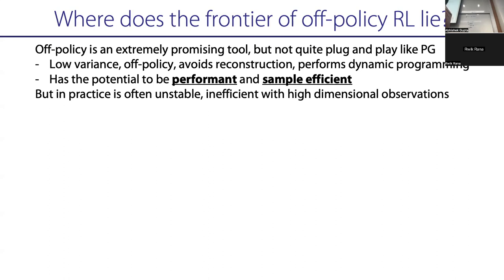It's often unstable, and when you go to high-dimensional observations, this gets even more problematic. A lot of deep RL research and robotic learning research right now is on how to make these off-policy RL methods more stable, more understandable, more scalable. Here are some directions that I think are interesting.